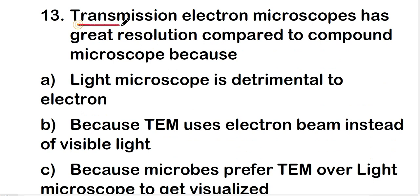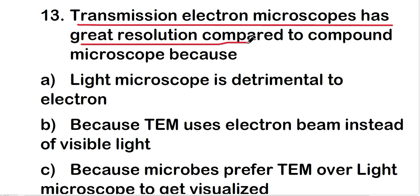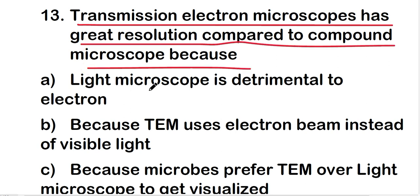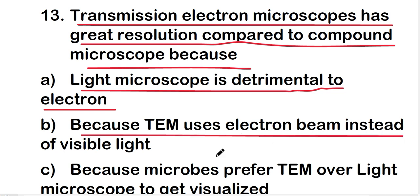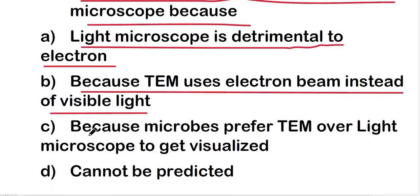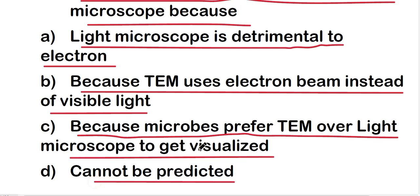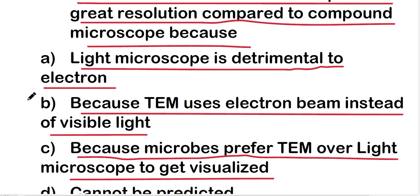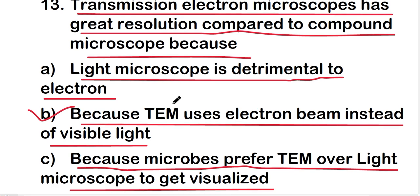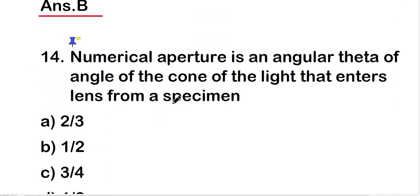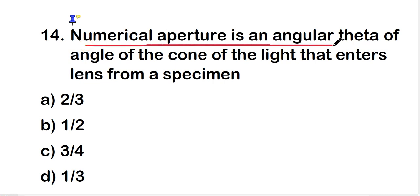Transmission electron microscope (TEM) has greater resolution compared to compound microscope because: light microscope is determined by electrons, TEM uses an electron beam instead of visible light, microbes prefer TEM to get visualized, or it cannot be predicted? The right answer is option B — TEM uses an electron beam instead of visible light, giving it greater resolution than the compound microscope.